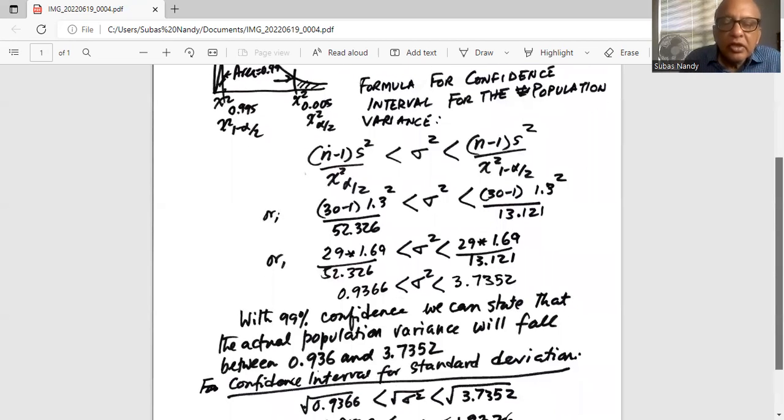What does it mean? With 99 percent confidence we can state that the actual population variance will fall between 0.936 and 3.735.